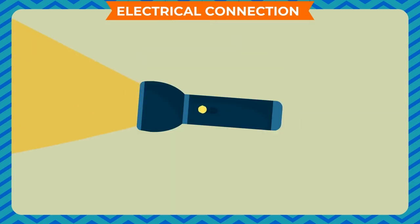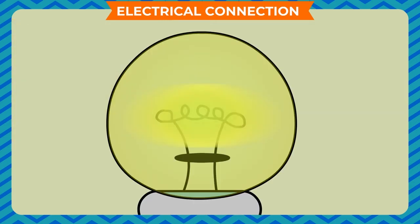When you switch on the torch, the bulb glows. The thin coiled wire in the middle emits light.